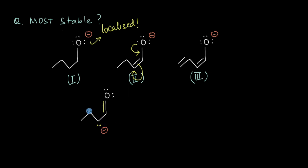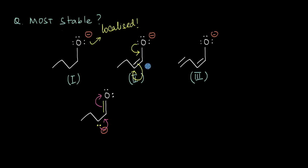Now because this lone pair is connected to a double bond it can resonate back, resonating with the pi bond to give us our original molecule. So what's happening is that this lone pair of electrons as well as these pi electrons are not localized to this oxygen atom and this carbon-carbon bond — in fact they are delocalized over the whole system. Therefore this anion is actually going to be a hybrid of both of these resonating structures.